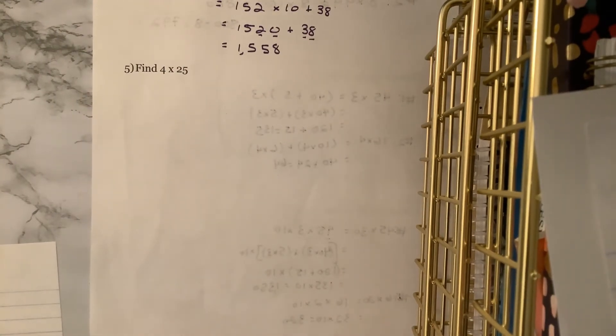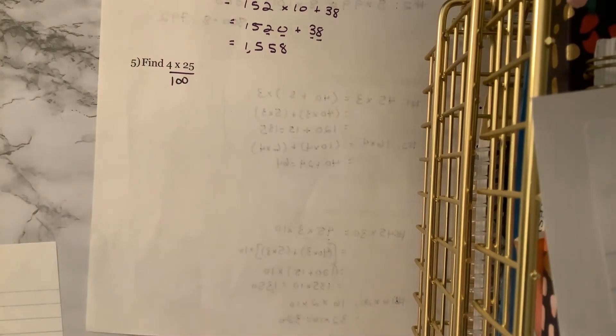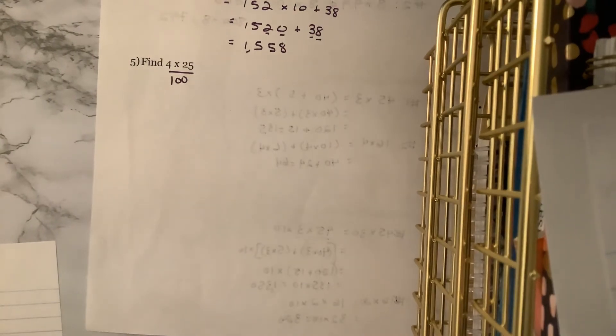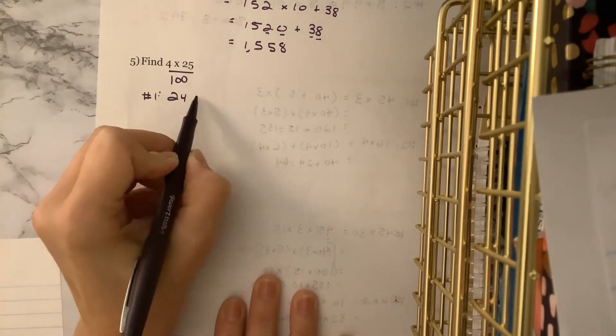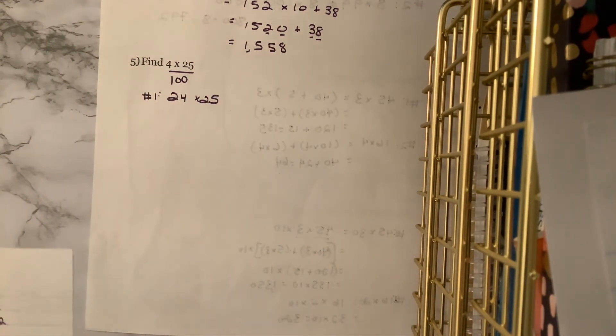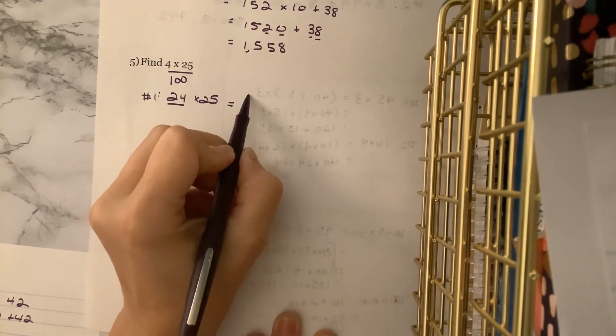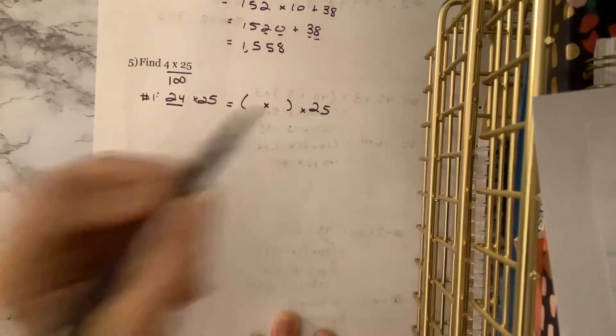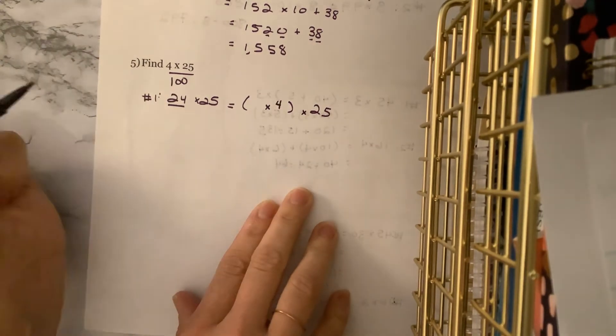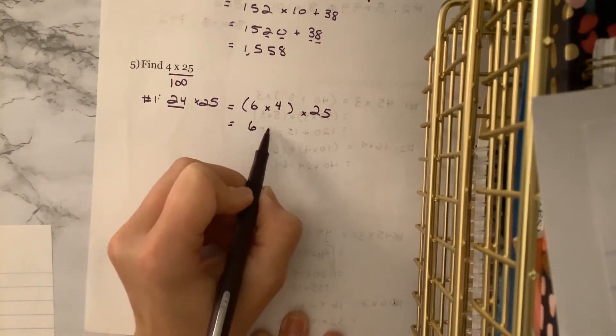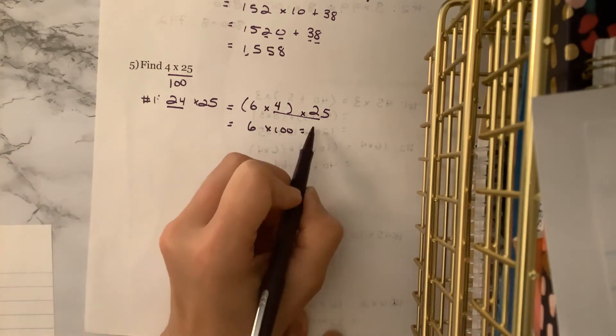All right. I call this one find 4 times 25, because what do you notice about 4 times 25? 4 times 25 is 100, and so if you can find 4 times 25, that means you're multiplying by 100, okay? So let's look at one example, 24 times 25. Fifth graders, this continues to use our distributive property or our commutative property. So we want to think about 24. Can we break this into factors where we're doing 4 times 25? So if I'm breaking this into factor pairs, 4 times what is 24? 4 times 6 is 24. Now we're doing 6 times 100, right? Because 4 times 25 is 100, and we can multiply in any order. 6 times 100 is 600.